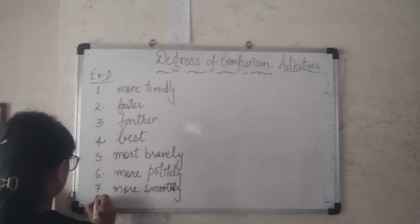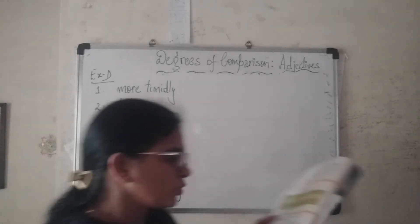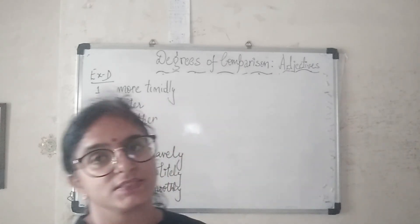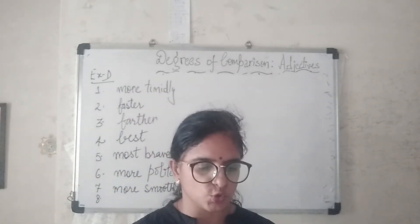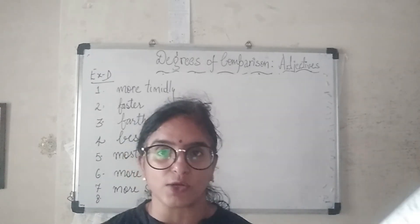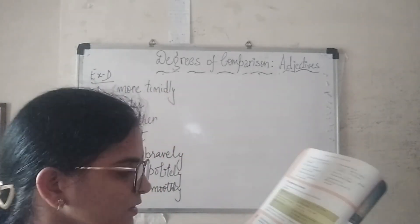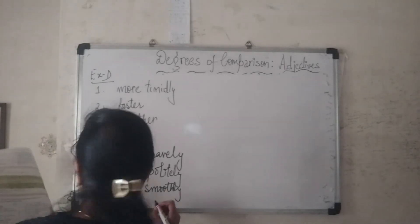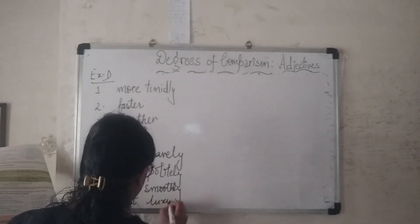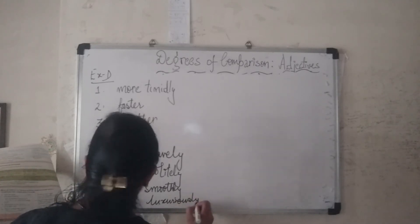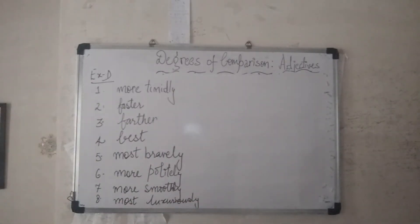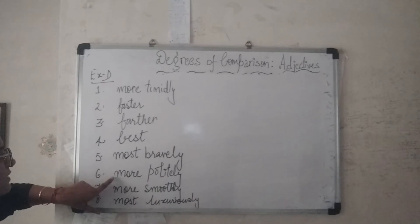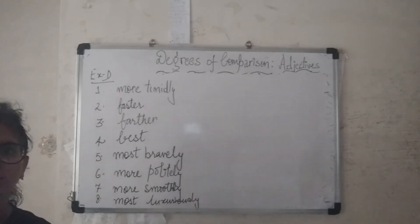Sentence 8: 'The king rode the ___ decorated chariot.' The adverb is 'luxuriously' — the answer is 'the most luxuriously decorated chariot'. So the answers for Exercise D are: more timidly, faster, farther, best, most bravely, more politely, more smoothly, and most luxuriously.